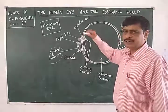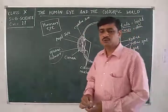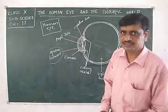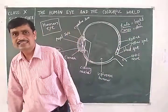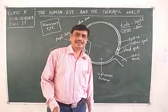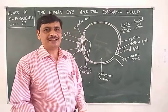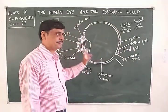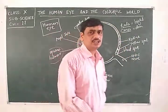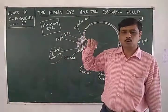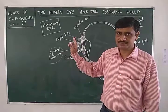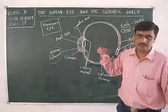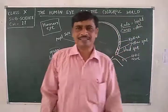When we touch our eyes, we feel they are slightly harder. This is due to the presence of the sclera, which is an opaque structure. Light cannot pass through it, so except for the cornea, all other parts of the eye are covered by the sclera, which provides toughness to the eye.